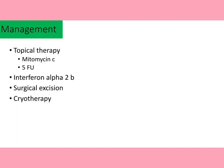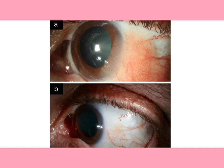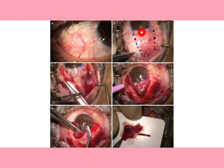Slit lamp photos show OSSN before and after MMC treatment, demonstrating full recovery after mitomycin C therapy. In surgical excision using the no-touch technique, the cut is made 3 mm away from the lesion. After excision, amniotic membrane is placed and topical chemotherapy — either mitomycin C or 5-fluorouracil — is started depending on the surgeon's choice.